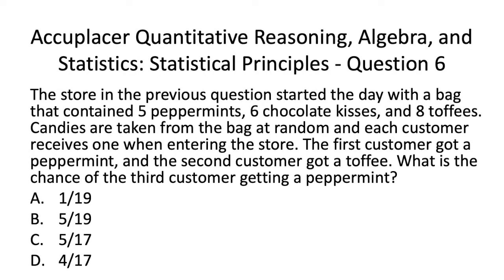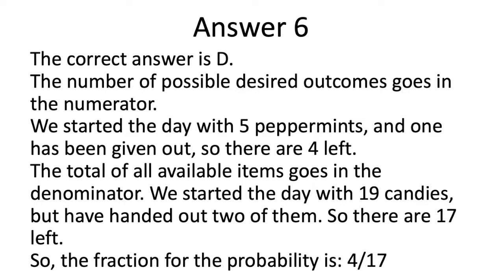Let's have a look at Acuplacer QAS Statistics Practice Test Question 6. The correct answer is D. The number of possible desired outcomes goes in the numerator. We started the day with 5 peppermints and 1 has been given out, so there are 4 left. The total of all available items goes in the denominator. We started with 19 candies but have handed out 2, so there are 17 left. The probability is expressed as 4 over 17, or a 4 in 17 chance.